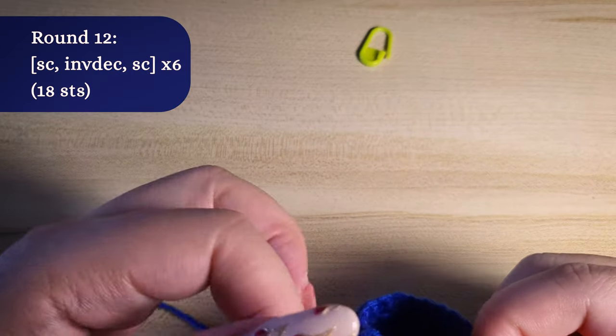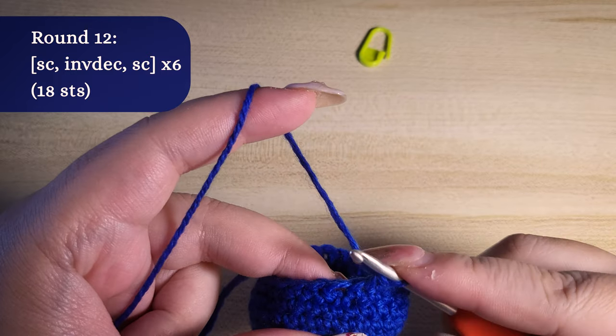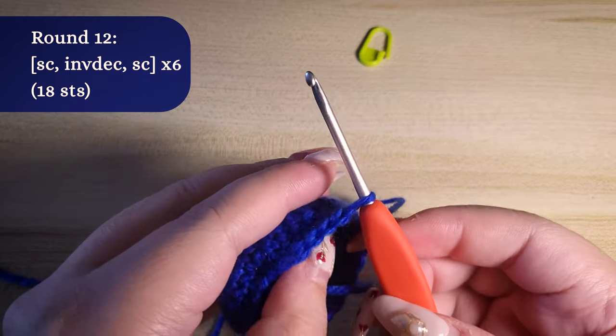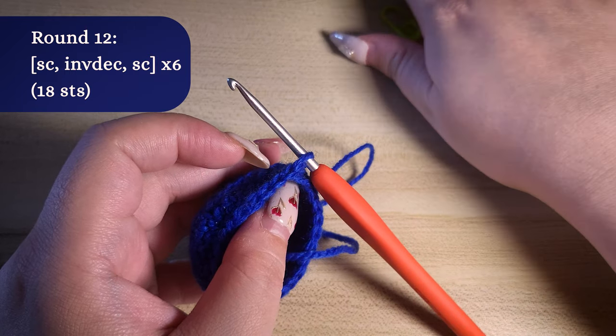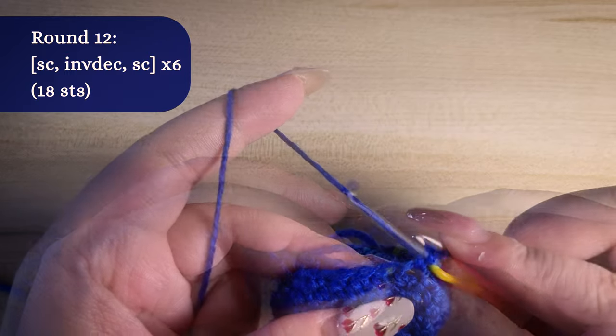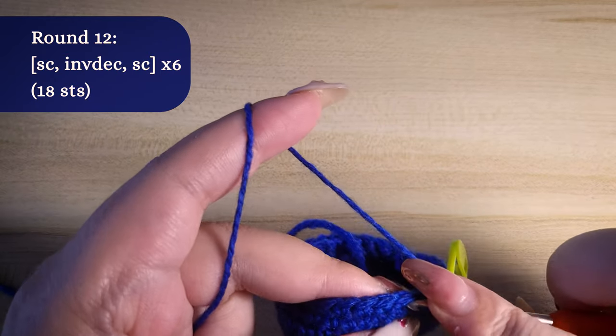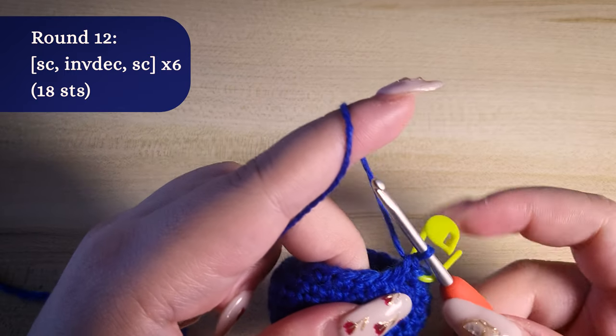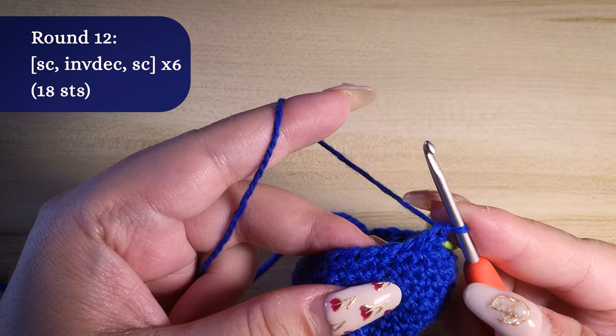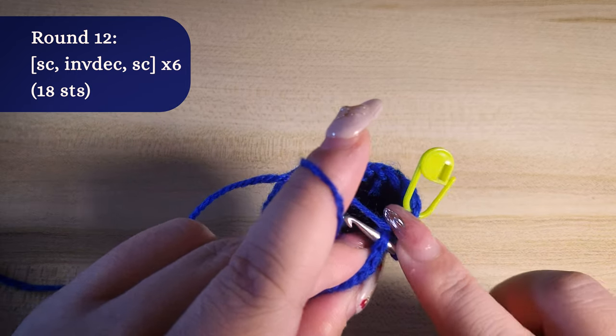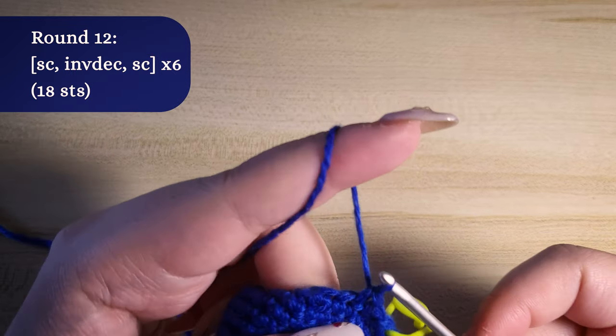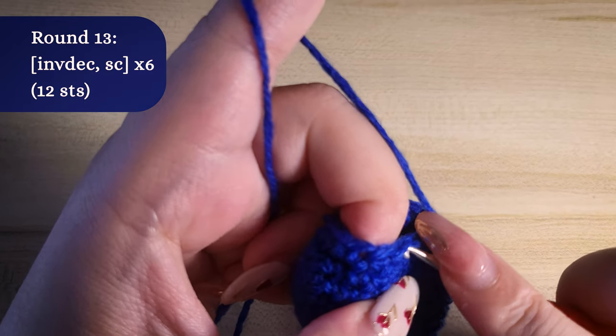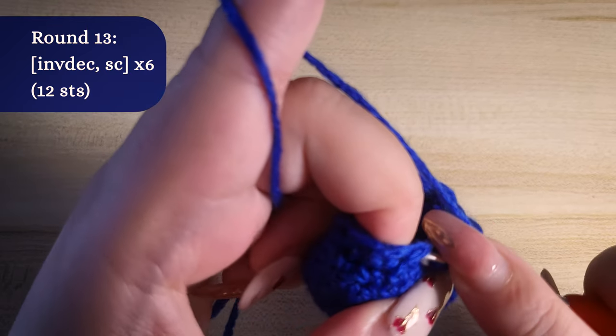Round 12, single crochet. Grab your stitch marker to mark the first stitch in the round, then invisible decrease, then single crochet again. Repeat this pattern for six times in total. We will have 18 stitches at the end of the round.